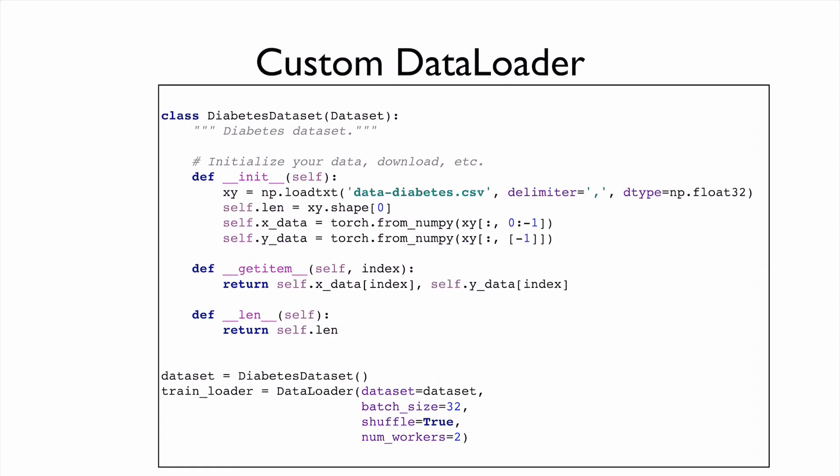So, for example, in our diabetes dataset, in init, what we need is that we just read this data, and then load into x and y. And then we compute this length, easy. And then we turn our numpy array to torch tensor. And this is the command torch.from_numpy. And then we save that as x_data and y_data.